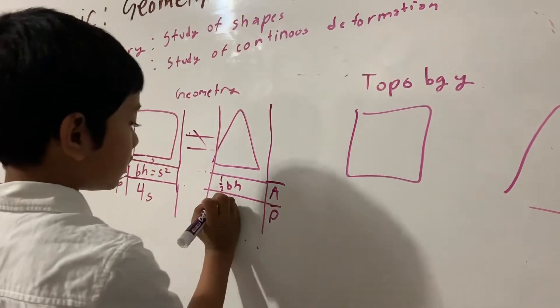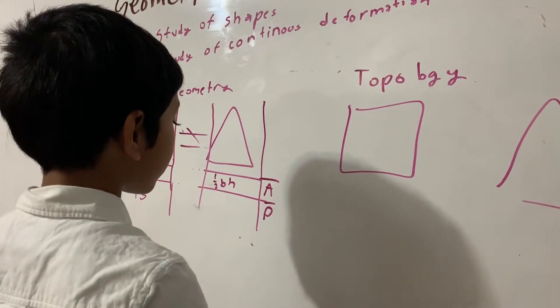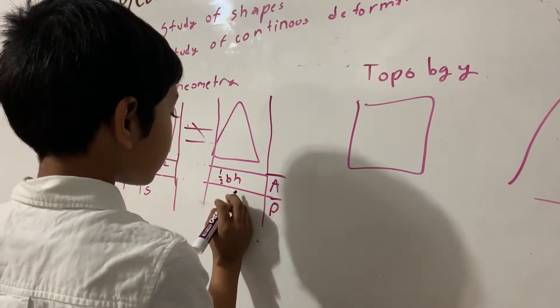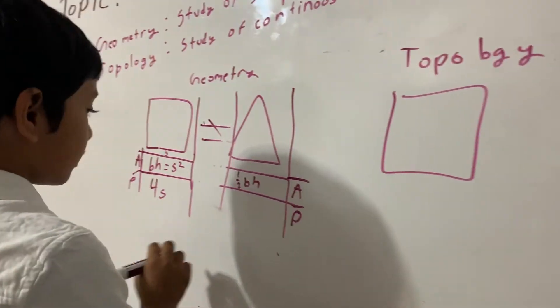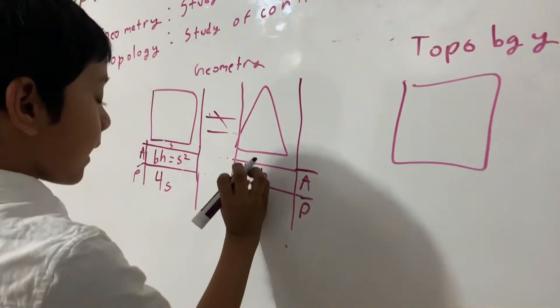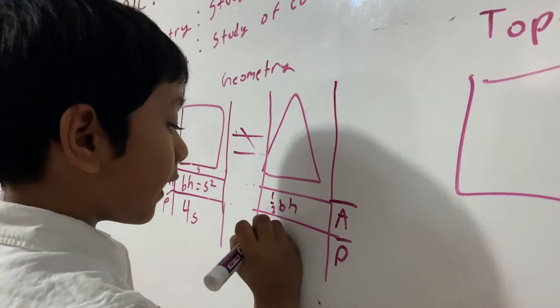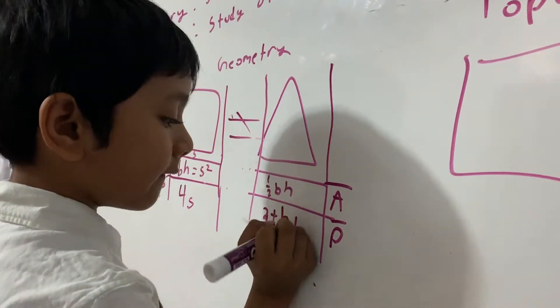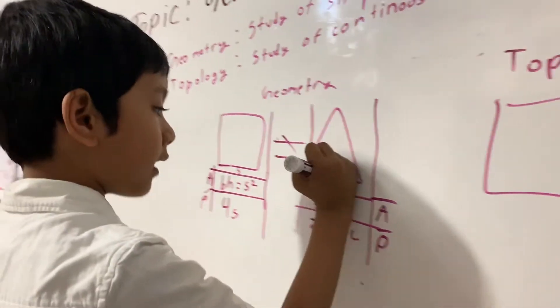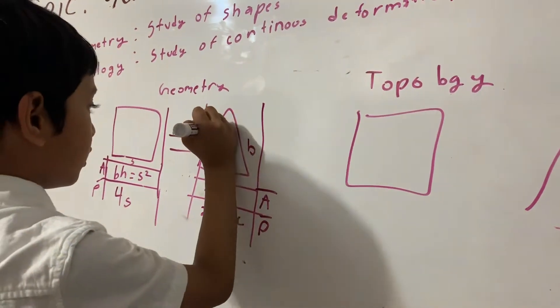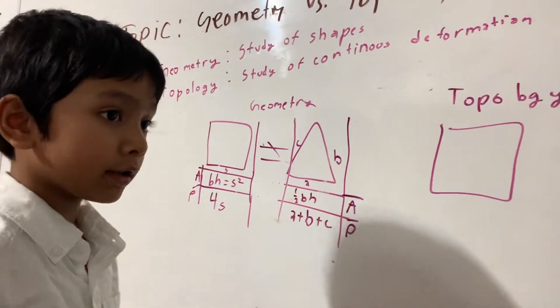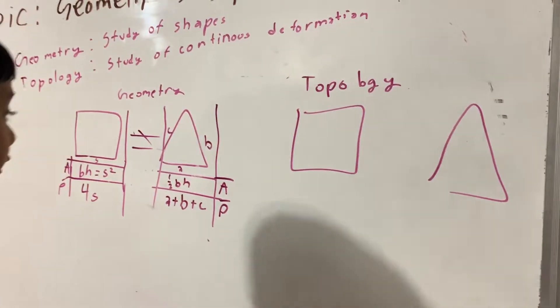And the perimeter is A plus B plus C, where A, B, and C are the lengths of the sides of the triangle.